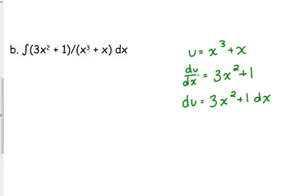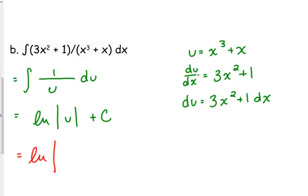So, that means that we can go over here to our integral. And our numerator goes away. It gets replaced by du. And the denominator is u. So, it's just 1 over u. And the antiderivative of 1 over u is the natural log of u. Put the absolute value around it. And then you plug in your u. The natural log of x cubed plus x plus c.